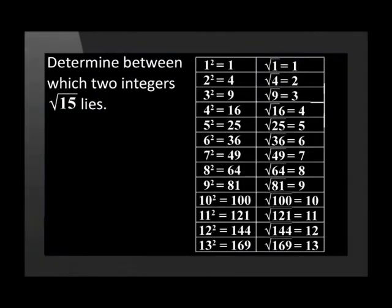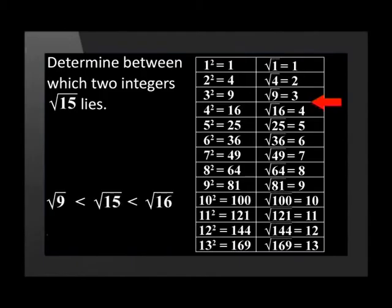These questions are going to ask us to do this without the use of a calculator. Let's do the same example without a calculator. We simply need to determine which are the first perfect square integers that are less than and greater than 15. If we look at the table of squared numbers, we see that the square root of 15 will fall between the square root of 9 and the square root of 16. This means that our answer is 3 is less than the square root of 15, which is less than 4.